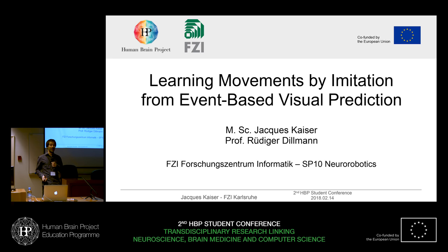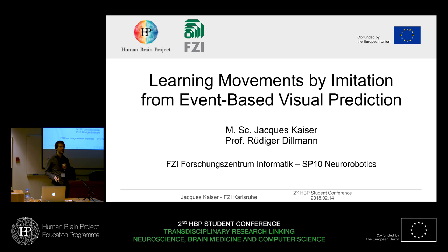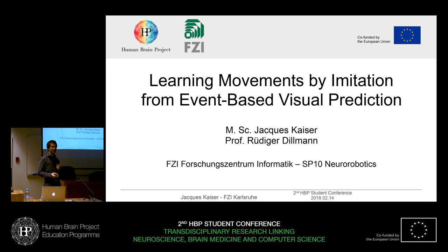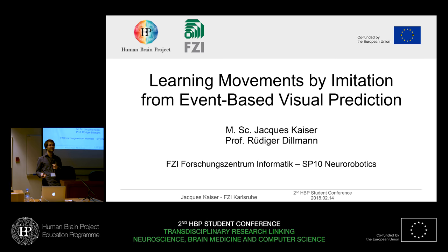Hi everyone. I am Jack Kaiser and today my paper is on Learning Movements by Imitation from Event-Based Visual Prediction. This is joint work with Professor Rüdiger Dillman. We're working at FZI, Forschungszentrum Informatik in Karlsruhe, and we are part of the SP10 Neurobotics of the Human Brain Project.